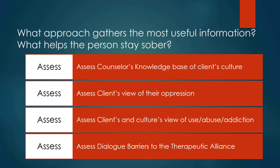Assessing the client's and culture's view of use, abuse, and addiction — there are some cultures where drinking a lot, binging, using drugs, or gambling is not seen as an addiction. So how does that client stay within their culture and still stay sober? Finally, assessing the dialogue barriers to the therapeutic alliance — what differences between you and the client need to be addressed? Until you address them, you won't gain the useful information you need, and the client will be less likely to stay sober.